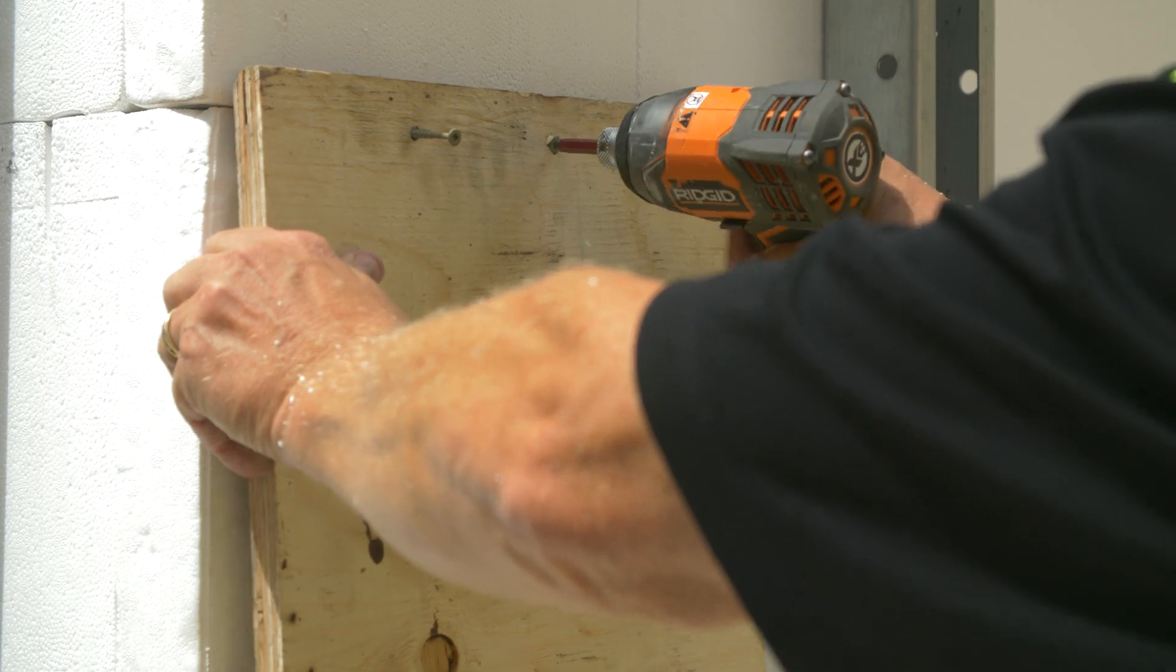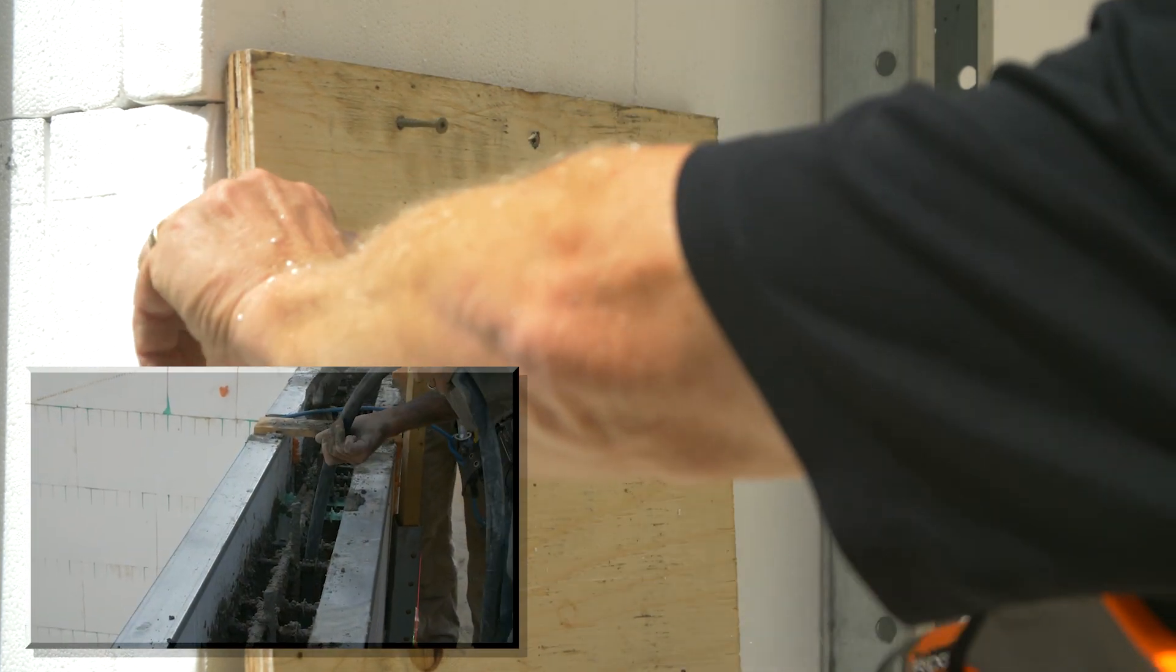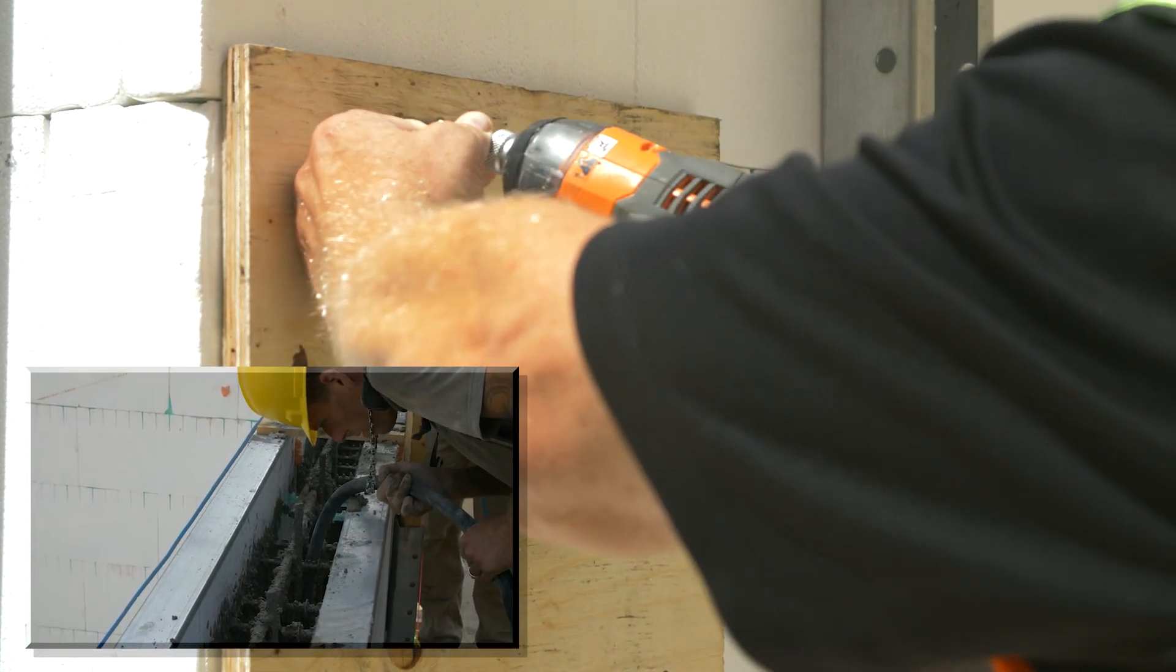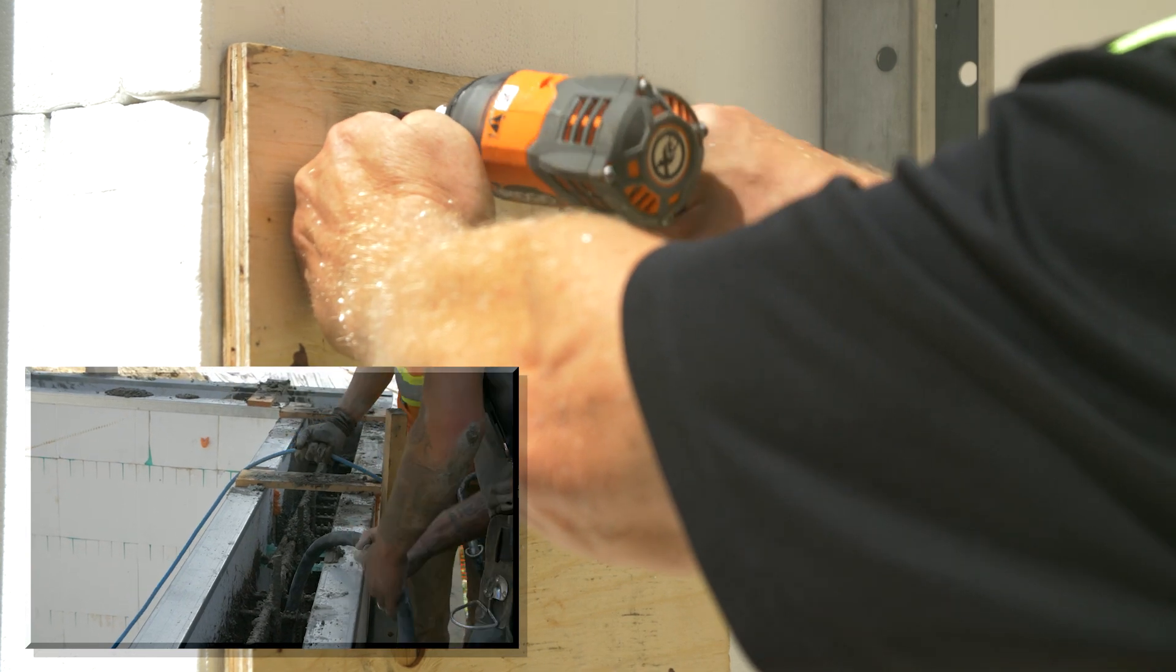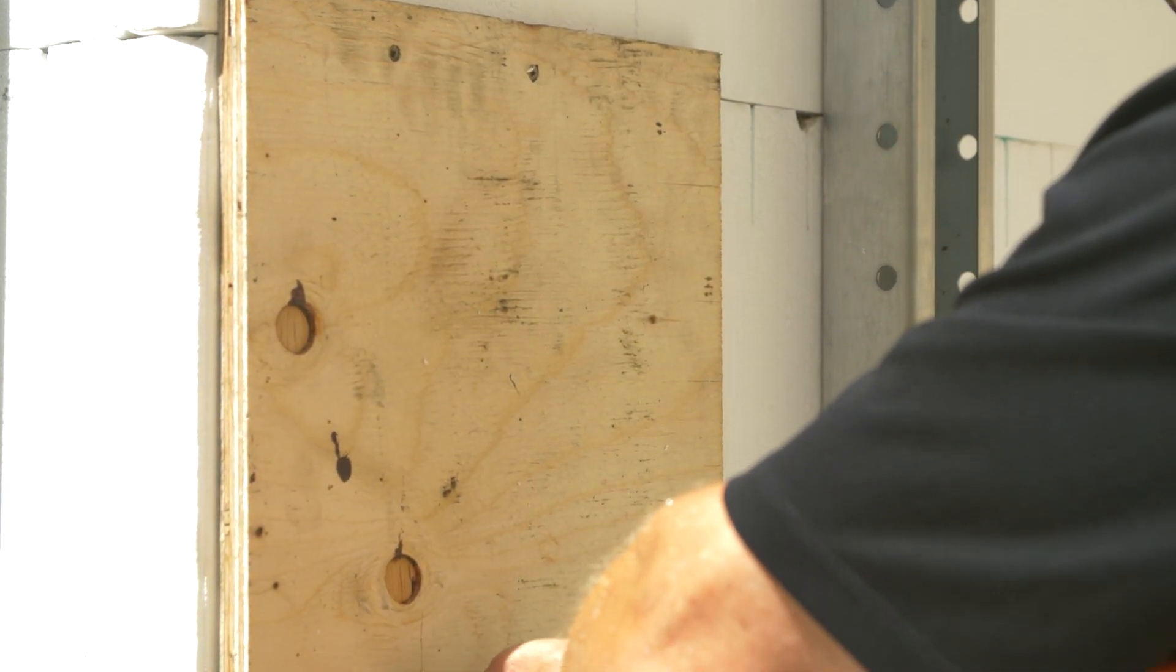Vibrate concrete thoroughly at these locations to ensure the concrete presents at the face of the EPS panel. Remove the plywood to expose a hard point for fastening.